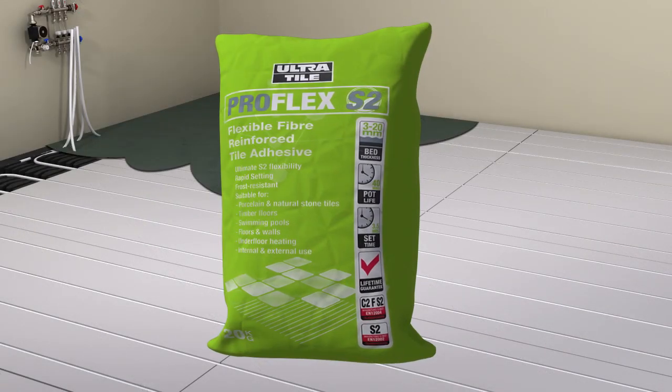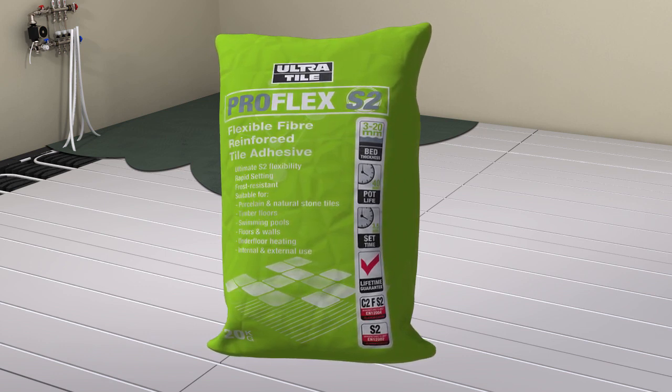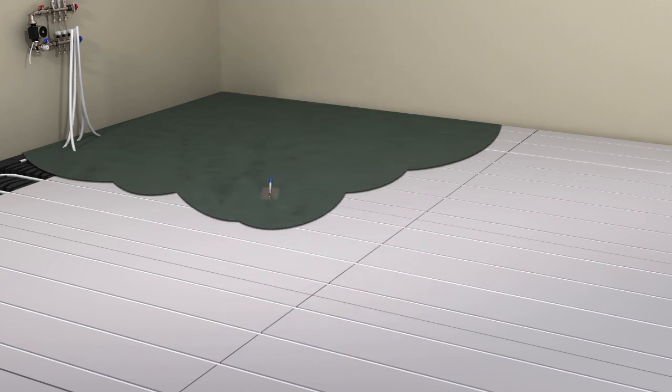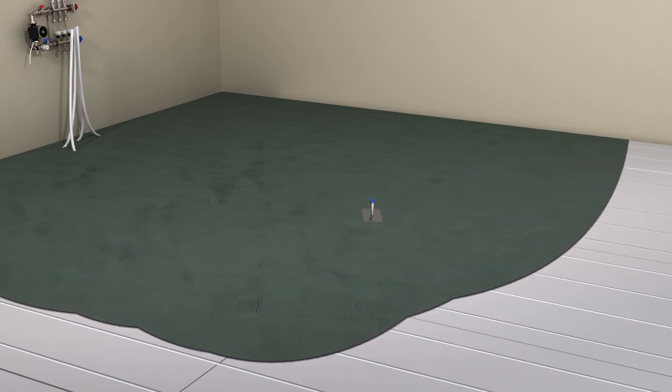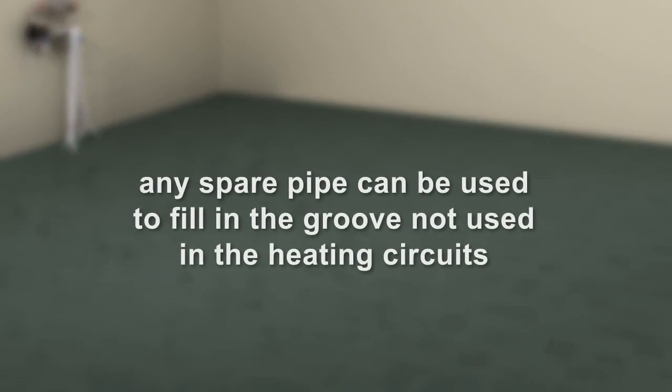Fix the tiles with a 3-5mm coat of Ultra Pro Flex reinforced S2 adhesive using a notched trowel. This must cover all of the board, inclusive of the grooved area where the pipe has not been installed. Any spare pipe can be used to fill in the groove not used in the heating circuits.